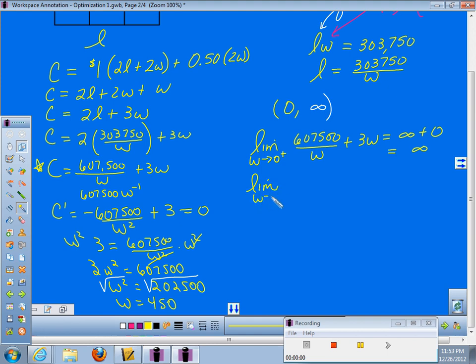Now, I need to do the limit on the other end. I need to do the limit as we go to infinity. Okay, well, what do I know the limit is? If I put 607,500 divided by infinity, we know that goes to zero. Three times infinity is infinity. And so, I get another infinity here. All I have to do is prove that my critical point comes out less than infinity to have a minimum.